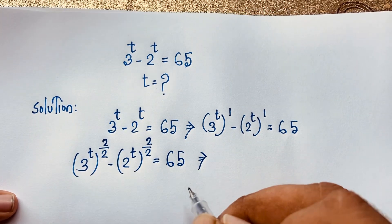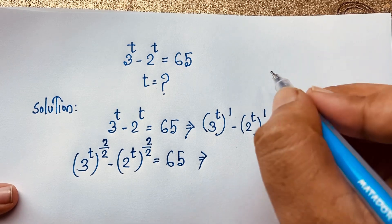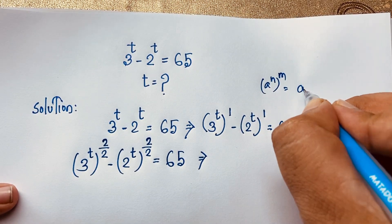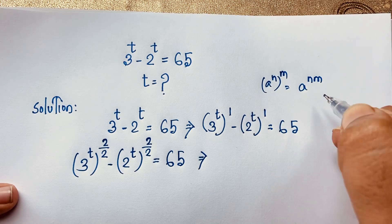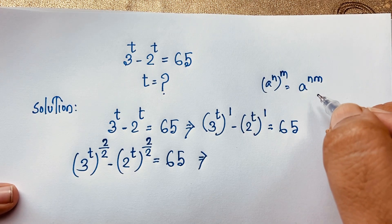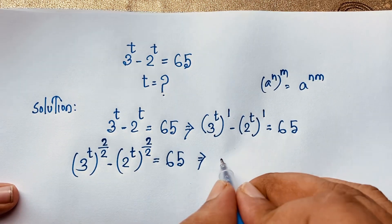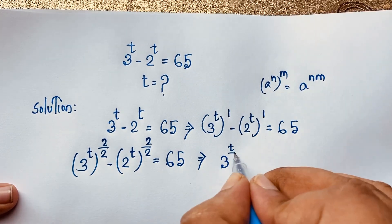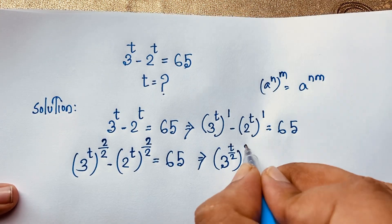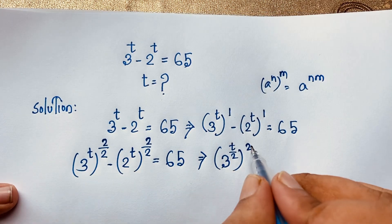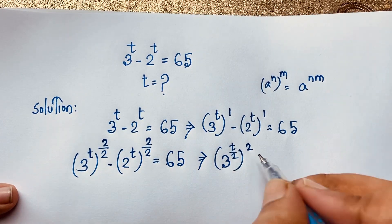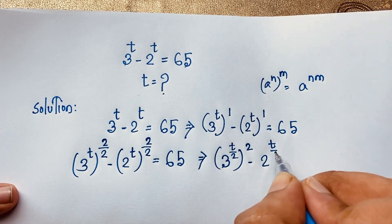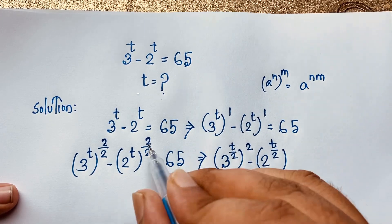Now I apply the exponential formula: a to the power n, bracket to the power m, equals a to the power n times m. Applying this formula, the expression becomes 3 to the power t over 2, bracket squared, minus 2 to the power t over 2, bracket squared, is equal to 65.